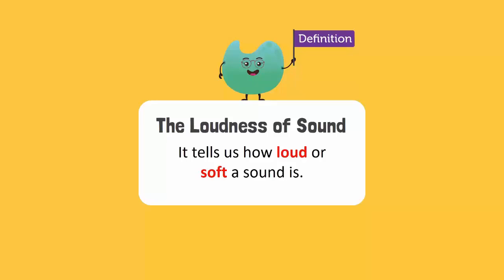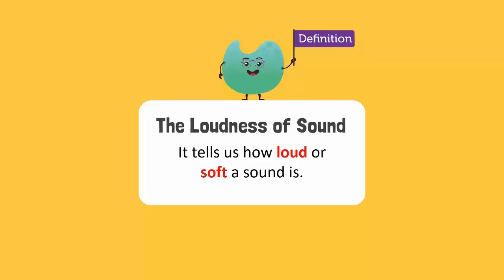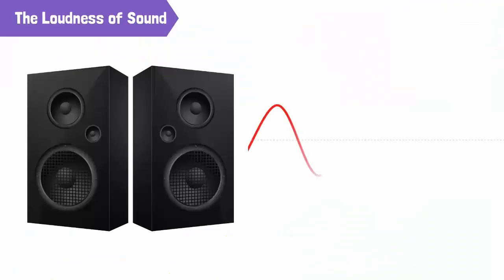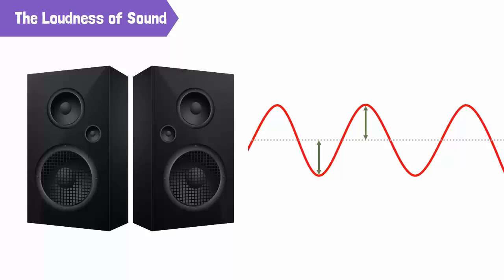Next, let's discuss the loudness of sound. The loudness of sound basically tells us how loud or soft a sound is. When we talk to our friends, our voice is soft, but when we address a public gathering, our voice is loud. The loudness of a sound depends upon the amplitude of the vibrating object — the larger the amplitude, the louder the sound. It is measured in decibels.